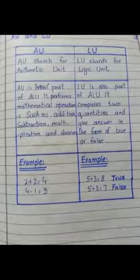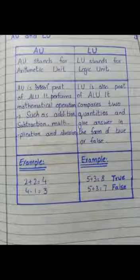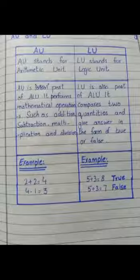یہ mathematical operations ہیں، یعنی کہ maths کے کام ہیں۔ Example: 2 plus 2 is equal to 4، اور 4 minus 1 is equal to 3۔